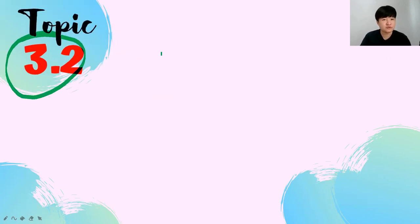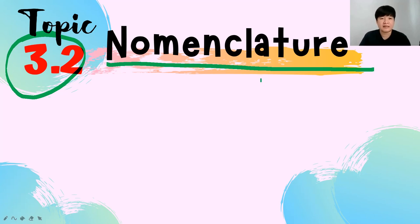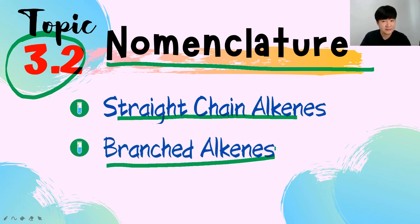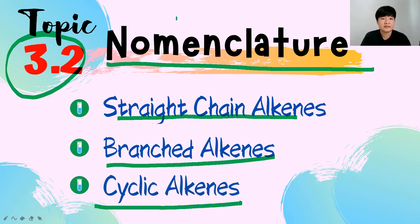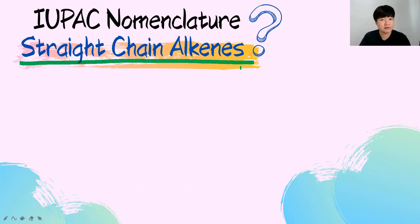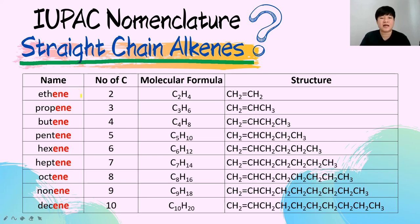Moving to section 3.2: nomenclature of alkene. We will cover straight-chain alkene naming, branched alkene, and cyclic alkene. The IUPAC system learned previously for alkanes applies 100% to alkenes with only slight changes. The main spelling change is replacing 'ane' with 'ene'.